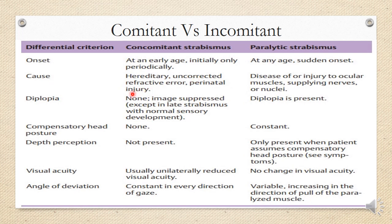Diplopia is not present in concomitant squint — either because of suppression or sensory adaptations such as anomalous retinal correspondence (ARC), or because amblyopia has established. Diplopia is very common and present in paralytic strabismus. What happens is that for a good period of life the patient had single binocular vision, but the moment a paralytic strabismus occurs, they start experiencing a double image due to unequal correspondence of both retinas. In concomitant cases, the brain quickly adapts and suppresses one image or develops ARC.